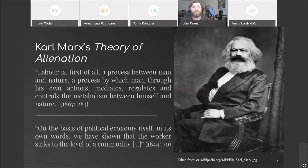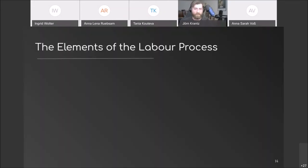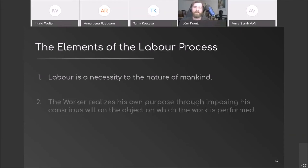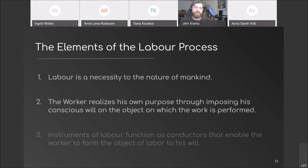The process of labor consists of three distinct aspects. Firstly, the ability to perform labor is in itself a very basic human need. Secondly, the worker realizes his own purpose through imposing his own conscious will on the object on which the work is performed. And thirdly, instruments of labor function as conductors that enable the worker to form the object of labor to his will.